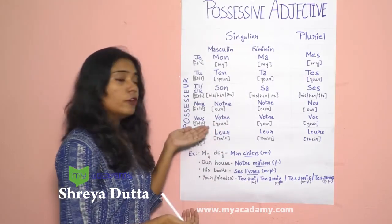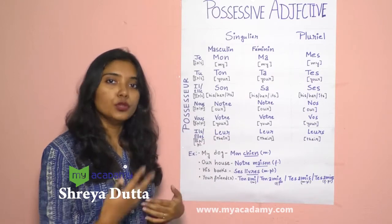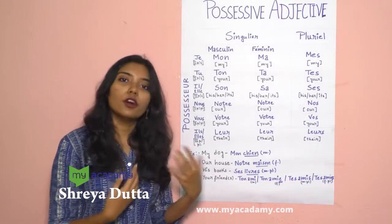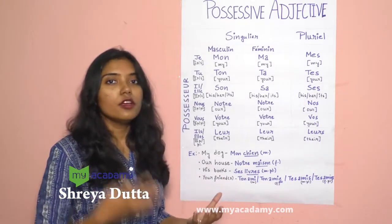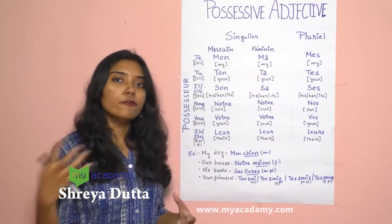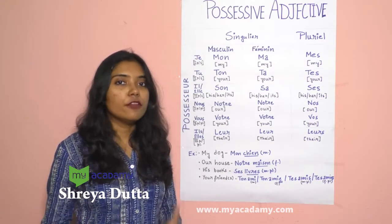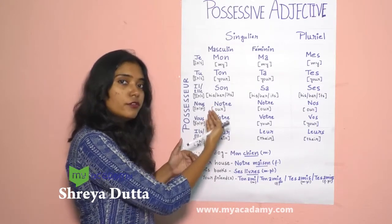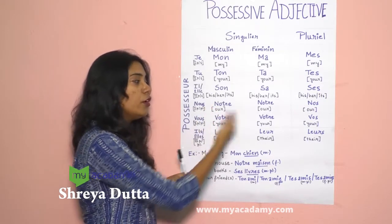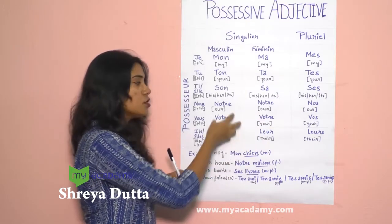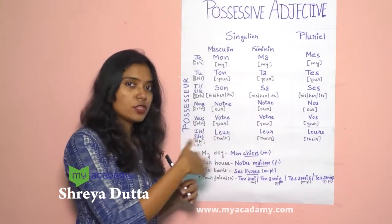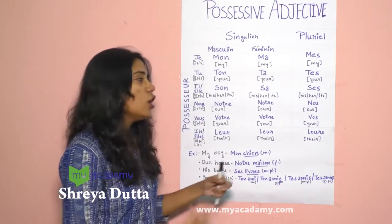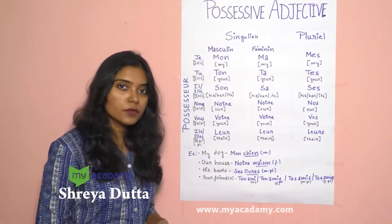The same rule applies for vous, meaning you in plural. For masculine singular, we use votre. For feminine singular, again votre — the same. And for masculine and feminine plural, we use vos. Just as with notre/nos, you only need to remember two forms: votre for masculine and feminine singular, and vos for plural.